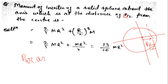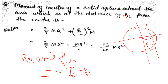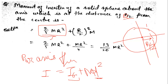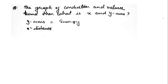The parallel axis theorem states: I = Ig + Md², where Ig is the moment of inertia about the center of gravity axis, and d is the given distance. Here d = R/2, and Ig for a solid sphere = (2/5)MR². Substituting: I = (2/5)MR² + M·(R/2)² = (2/5)MR² + (1/4)MR² = (13/20)MR². This was a very easy question — I hope you all got it right.